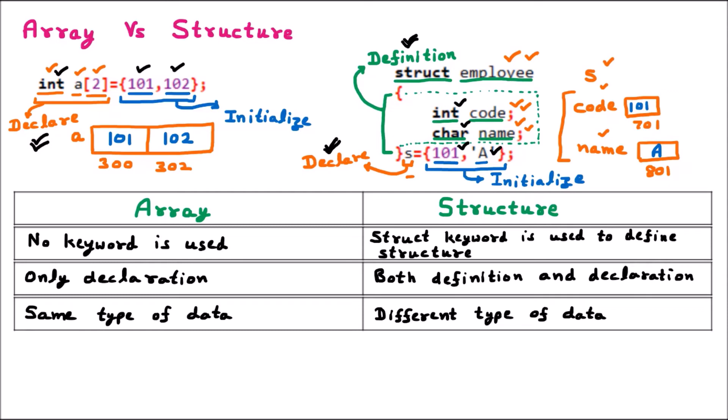For declaring an array we use the int data type. Int, float, and char are called system data types, primitive data types, or inbuilt data types — they are part of the system. Since we create the array 'a' of size 2 from this primitive data type, the array is derived from the primitive. That is why array is called a derived data type.